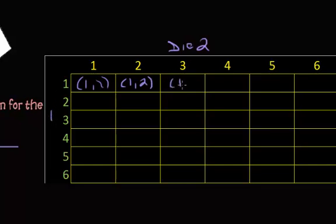So then this will be 1,3, 1,4, 1,5, and 1,6. And then you'd move on and do this row, which would be 2,1, and so on until you finish the table.